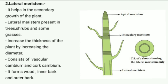Lateral meristem helps in the secondary growth of the plant, which commonly occurs in dicot plants. It is present in trees, shrubs, and some grasses and increases the thickness of the plant by increasing the diameter, as the vascular system of the plant expands.